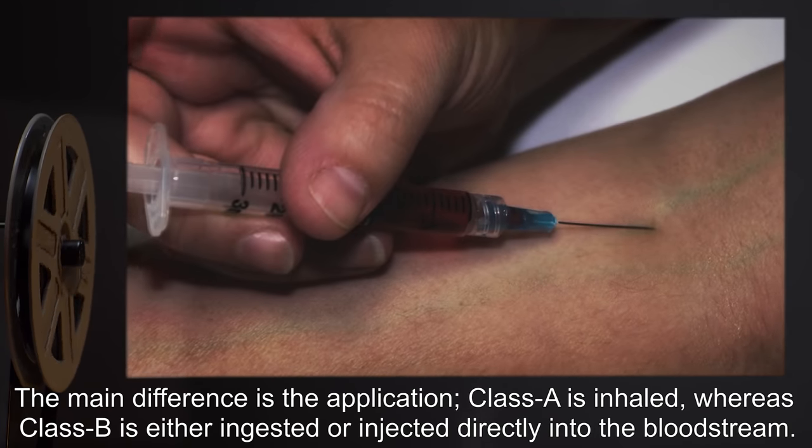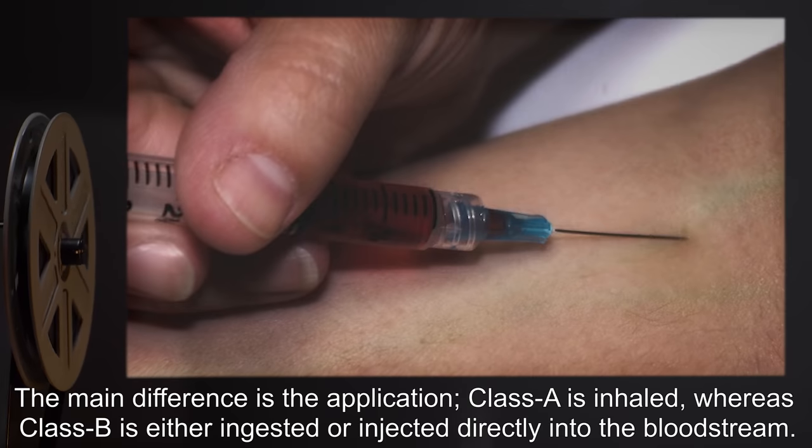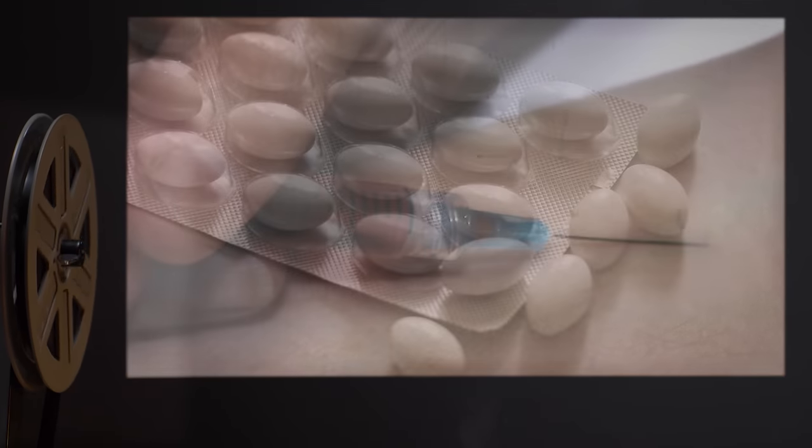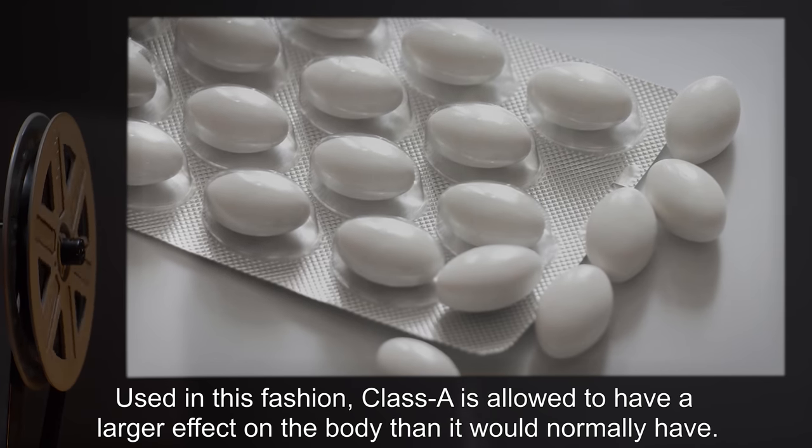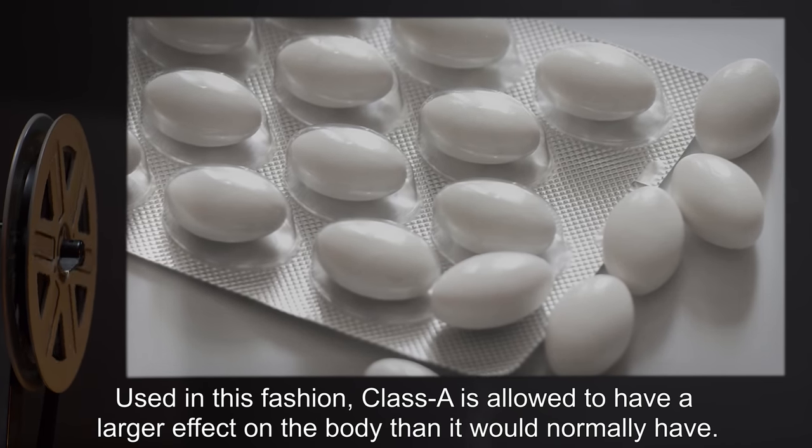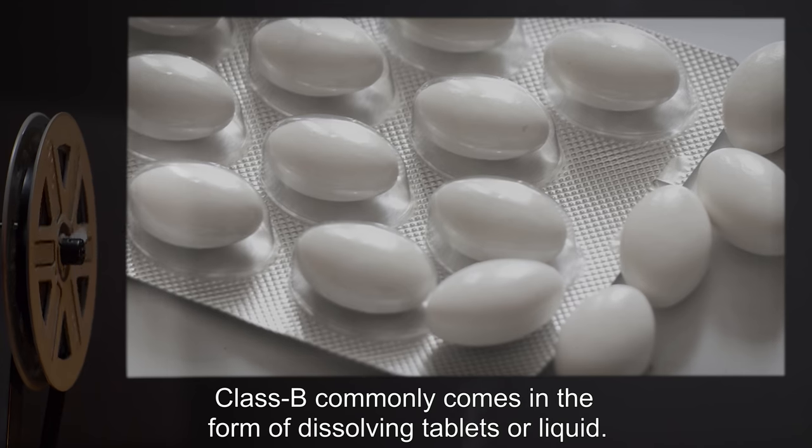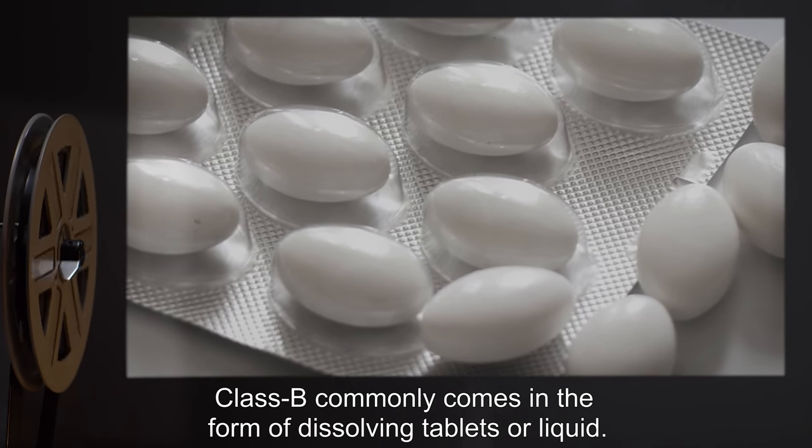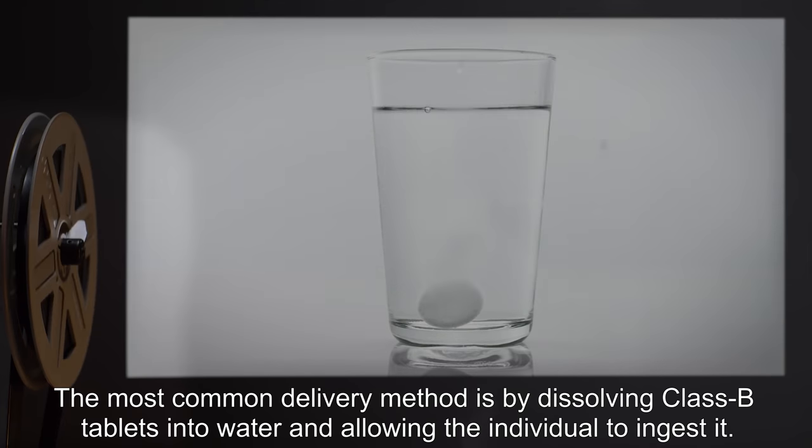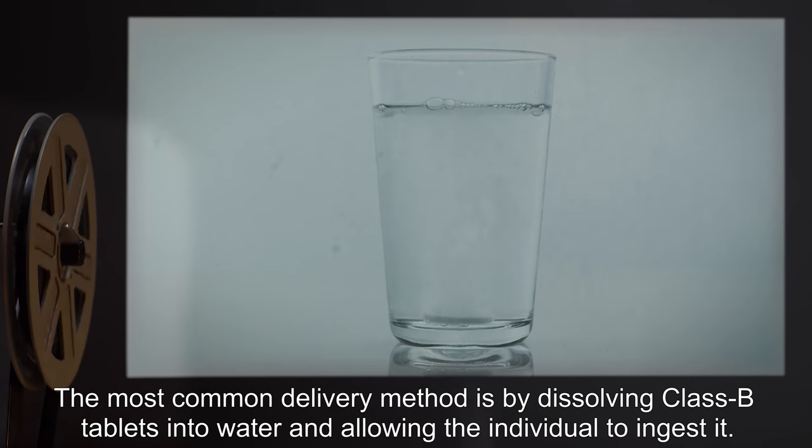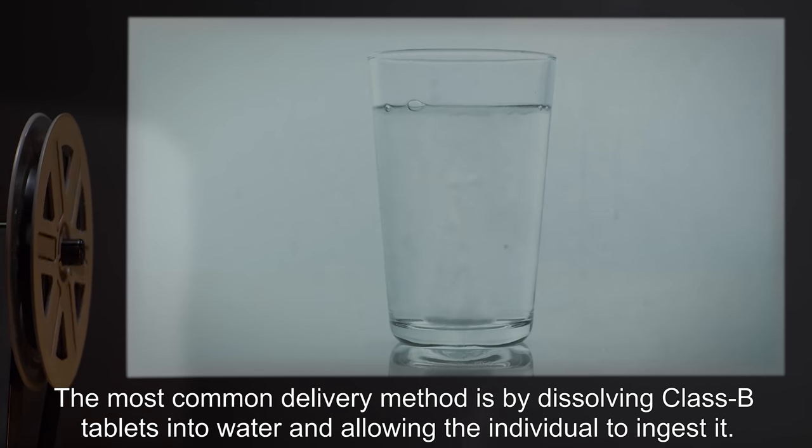Class A is inhaled, whereas Class B is either ingested or injected directly into the bloodstream. Used in this fashion, Class A is allowed to have a larger effect on the body than it would normally have. Class B commonly comes in the form of dissolving tablets or liquid. The most common delivery method is by dissolving Class B tablets into water and allowing the individual to ingest it.